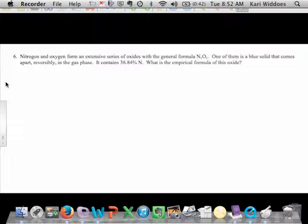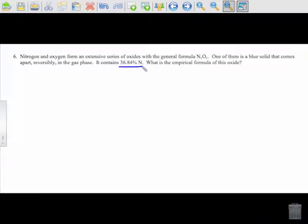So this says nitrogen and oxygen form an extensive series of oxides with the general formula NXOY. One of them is a blue solid that comes apart reversibly in the gas phase. AP is famous for this. Does any of that really matter? No. Doesn't matter if it's blue, doesn't matter. It's just kind of there. They're called distractors. Just be aware of that. It contains 36.84% nitrogen. What is the empirical formula?